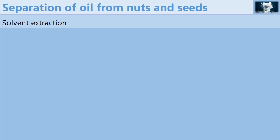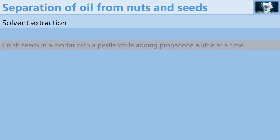The separation of oil from nuts or seeds is known as solvent extraction. The procedure involves crushing seeds or nuts in a mortar with a pestle while adding propanol a little at a time.